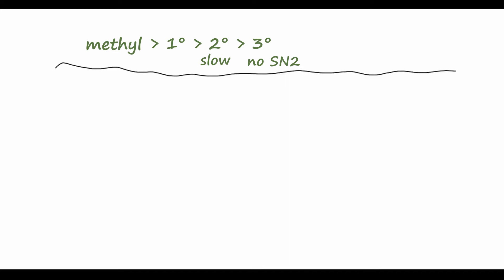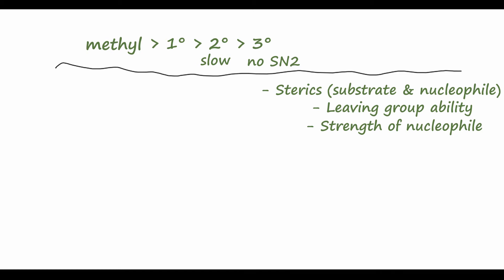So for the rest of this video, I want to take a look at some examples where we can compare the rates of two SN2 reactions, depending on some of the properties that we've talked about in previous videos. So the things that I want you to pay attention to are the sterics of the nucleophile and the electrophile, the strength of the leaving group, the strength of the nucleophile that you're using in the reaction, and the solvent that we're choosing to use for a particular SN2 reaction.